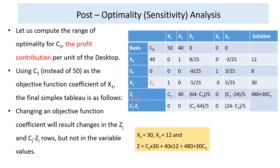Only zj and cj − zj are affected when 50 (the profit contribution of desktop) is replaced with c1. For the optimum solution, the cj − zj values should be less than or equal to 0 for a maximization linear programming problem.